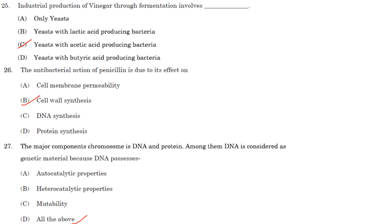The antibacterial action of penicillin is due to its effect on cell wall synthesis. Penicillin kills susceptible bacteria by inhibiting the transpeptidase enzyme that catalyzes the final step in cell wall biosynthesis — the cross-linking of peptidoglycans. Answer is option B.